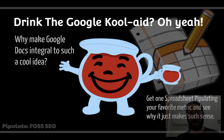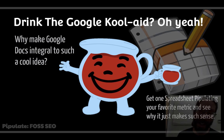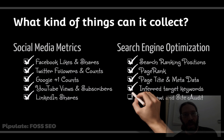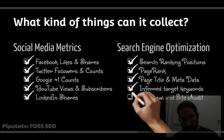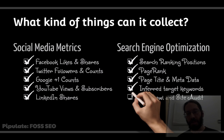This might sound like drinking the Google Kool-Aid — using their services to track performance in their products and recording it in their services. Well, it's just a really great way to do it right now. Here are some of the metrics you can record: Facebook likes and shares, Twitter followers and accounts, Google Plus ones, YouTube subscribers, search rank positions, and page rank for as long as it's of any value.